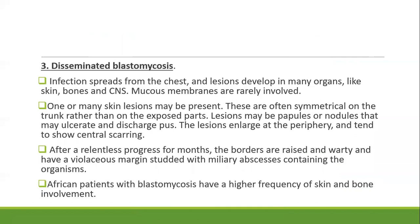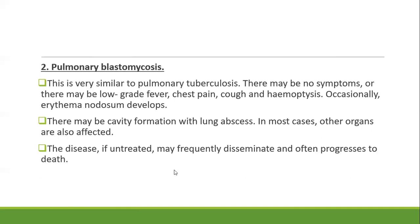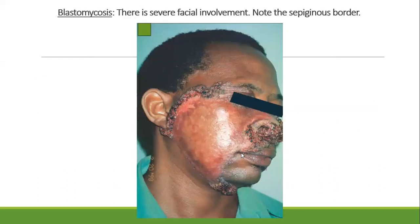The third form, disseminated blastomycosis, occurs when infection spreads from the chest and lesions develop in many organs — primarily skin, bone, and CNS. Mucous membranes are rarely involved. One or many skin lesions may be present, often symmetrical on the trunk rather than exposed parts. Lesions may be papules or nodules that ulcerate and discharge pus, enlarging at the periphery with central scarring. After relentless progress for months, the borders are raised, verrucous, and have violaceous margins studded with miliary abscesses containing the organism. African patients with blastomycosis have a higher frequency of skin and bone involvement.